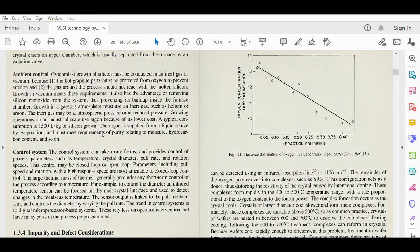The fourth subsystem is the control system. The control system can take many forms and provides control of process parameters such as temperature, crystal diameter, pull rate, and rotation speeds. This control may be closed loop or open loop. Parameters including pull speed and rotation are most available to closed loop control.